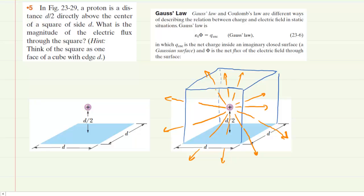And then we've gone ahead and drawn some electric field lines and we can see that these electric field lines as they emanate outward from the positive charge, they pierce each of the six faces of the cube.